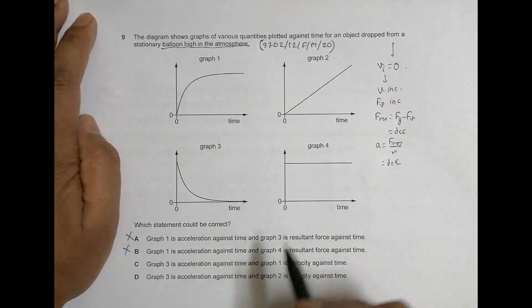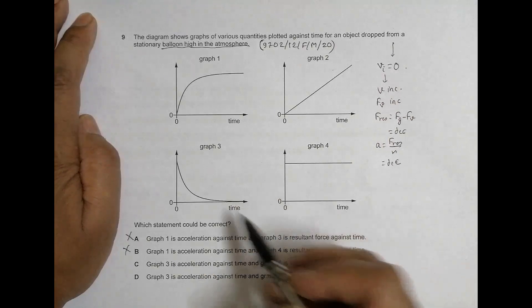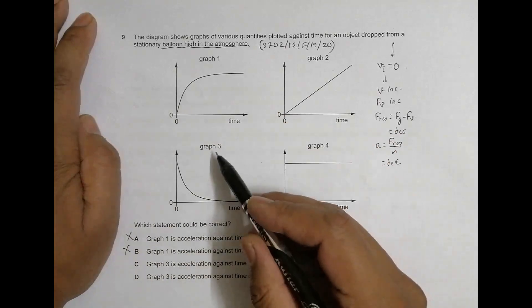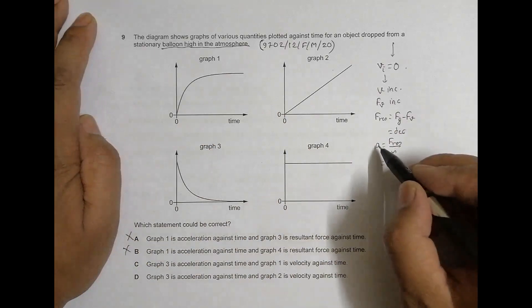So a should decrease means something that shows decreasing graph is only graph number 3. In all the other things it is increasing graph. So only in graph 3 we have got something decreasing, and a is decreasing.